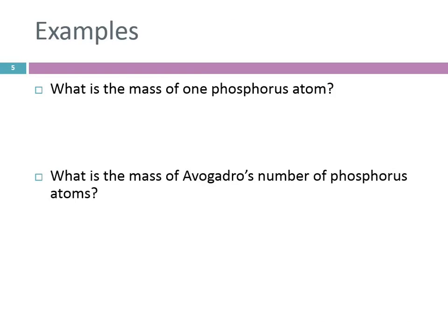A couple of questions: What is the mass of one phosphorus atom? We're all looking at the periodic table. Under phosphorus it says 30.97. What's the unit? AMUs — atomic mass units. This is the mass of an atom, so we use the atomic mass unit.